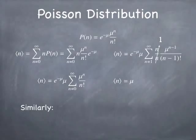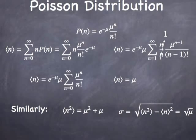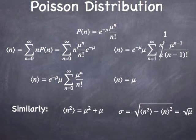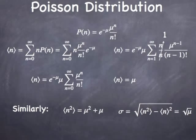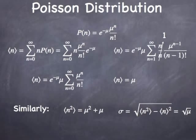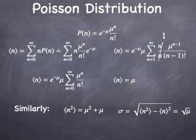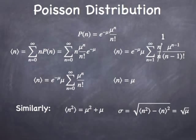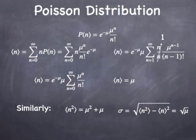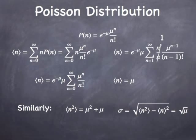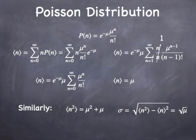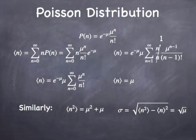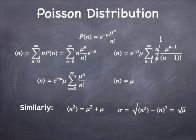You can play the same game for the expectation value of n squared — it turns out to be mu squared plus mu. The variance is the expectation value of n squared minus the expectation value of n, squared — that turns out to be just mu. So the standard deviation is the square root of mu. Both the expectation value of n and its variance are equal to mu, meaning this is a one-parameter distribution. I hope that helps with your answers to project 4 questions and gives you a sense of how to do calculations with the Poisson distribution.